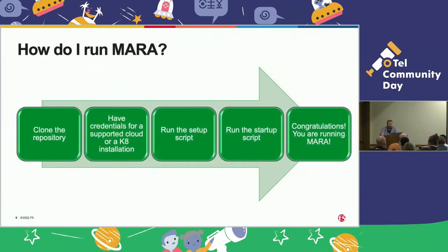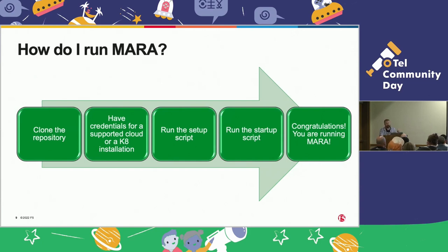So if we've reached this point and you're thinking you want to try this out, it's very simple. We have a vanity URL: nginx.com/Mara. Clone the repo, have credentials for a supported cloud, have credentials for a K8s installation that meets the minimum requirements. There's a setup script you can run that will go ahead and set all the right versions of the software we need. There's a startup script that churns for anywhere from 5 to 30 minutes, and at the end you're running Mara.